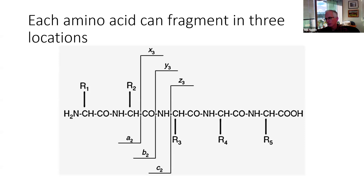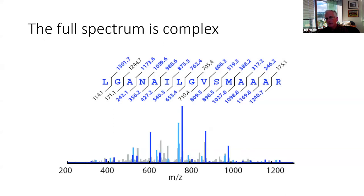There are actually multiple ways peptides can fragment — you can get B and Y, but also C and Z and A and X ions, so multiple ion types can show up per fragmentation event. You can also have molecular groups fall off the side, leading to what are called neutral losses. In practice the full spectrum is quite complex. The blue peaks are those corresponding to B or Y ions, lighter blue ones are neutral losses, and the gray peaks are unknown — some are noise, some are other peptides or non-peptide contaminants — and that's what makes the problem challenging.